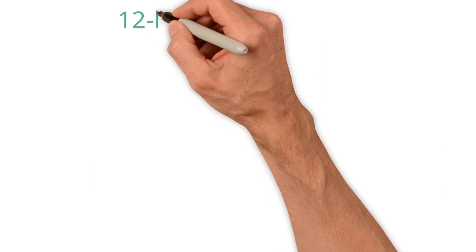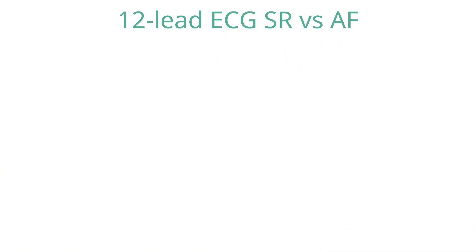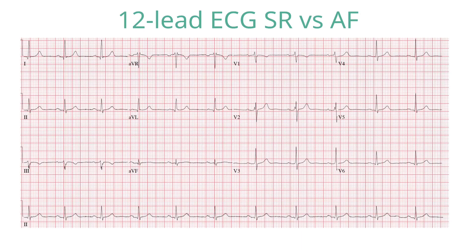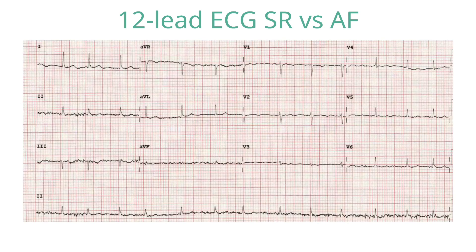So how can we recognise AF on the 12-lead ECG? This ECG shows normal sinus rhythm — there are regular P waves clearly visible, and every P wave is followed by a QRS complex. In contrast, in AF there are no visible P waves, and the QRS complexes are irregularly irregular, i.e. there is no pattern to their irregularity, which is the hallmark of atrial fibrillation.